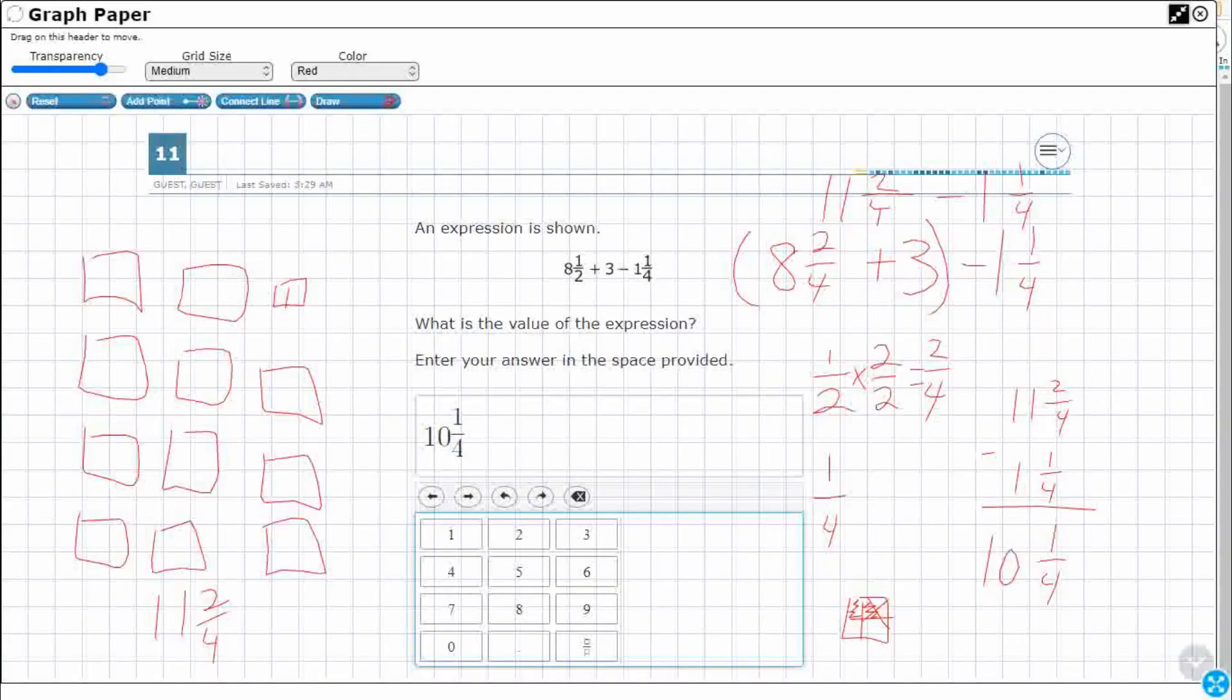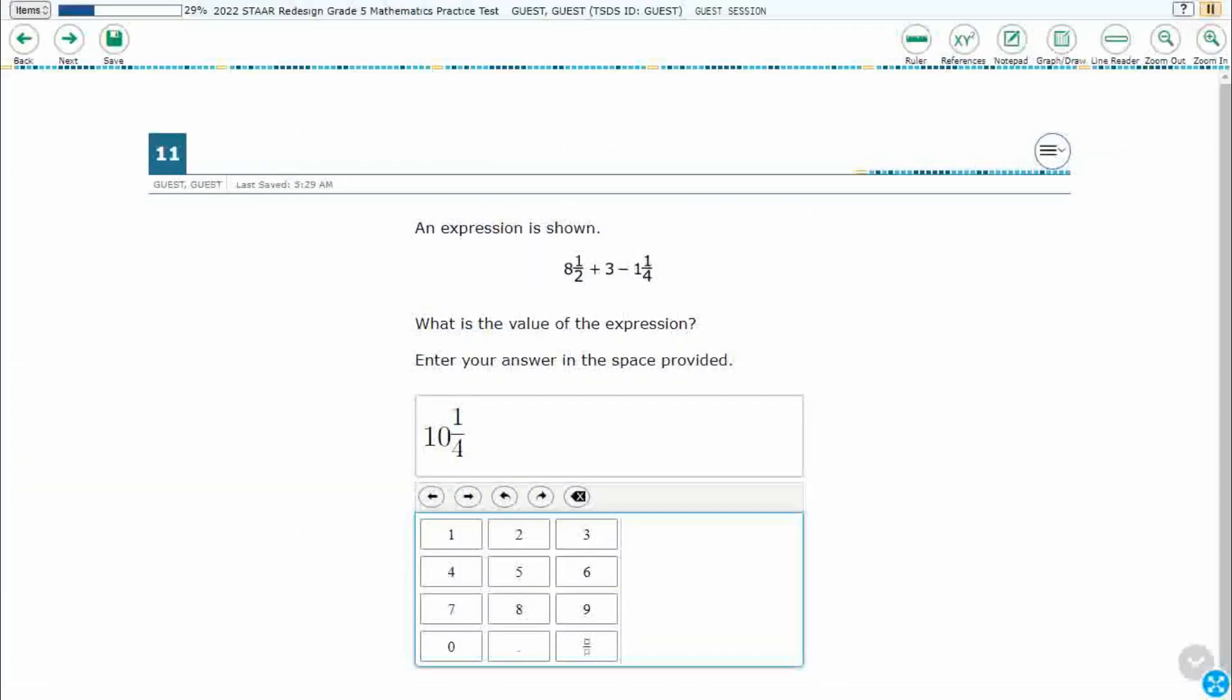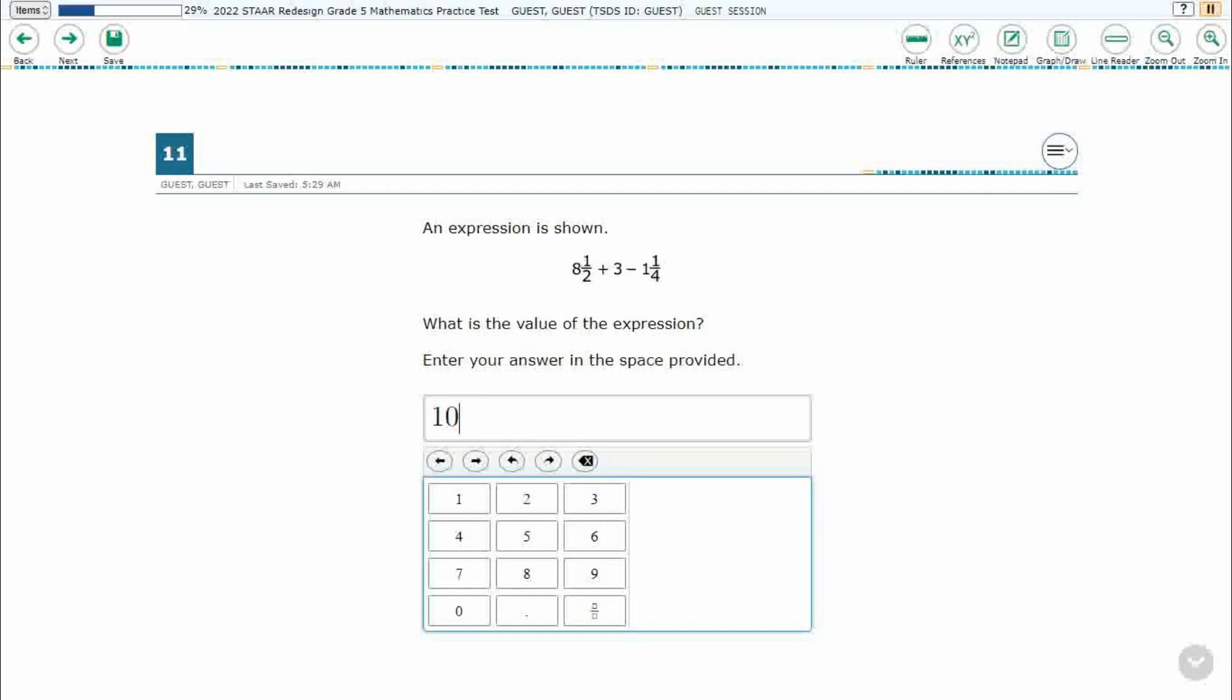If you'd rather, you can actually change it into a decimal. So one fourth is one quarter. So I know that that's 0.25. So guess what? That is also a correct answer. You can type in 10 and one quarter, or you can type in 10.25. And either answer is going to be correct.